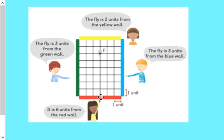And finally, if we wanted to, we could say that the fly is one, two, three, four, five, six meters or six units from the red wall. So, there are four different ways that we could describe where the fly is.